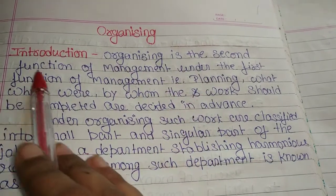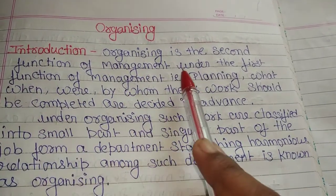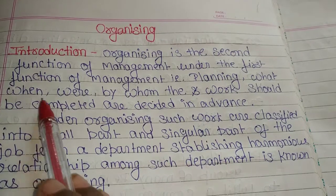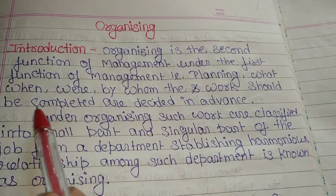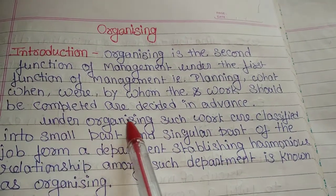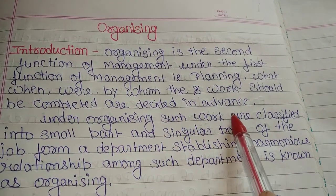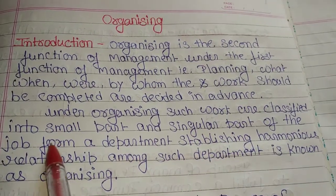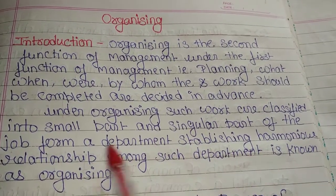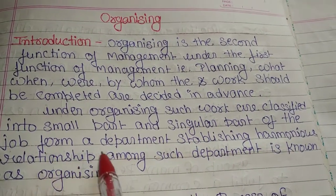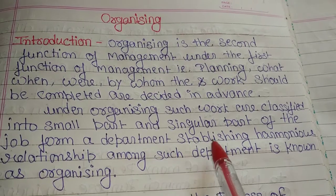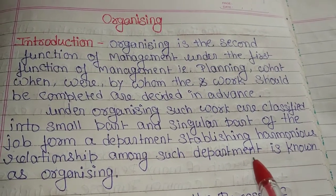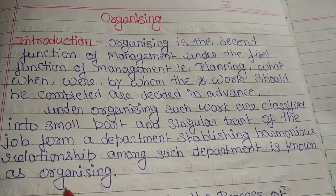Organizing is the second function of management. Under the first function of management — planning — what, when, where, and by whom the work should be completed are decided in advance. Under organizing, such works are classified into small parts, and singular parts of the job form a department. Establishing harmonious relations among such departments is known as organizing.